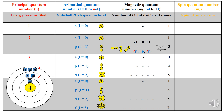The s orbital in the first energy level has only one orientation, as it is spherically symmetrical. In the second energy level, the p subshell has three p orbitals — 2px, 2py and 2pz — oriented along the x, y and z axis. There are five d orbitals in the third energy level with five different orientations, and in the fourth energy level there are seven f orbitals oriented along seven different directions.